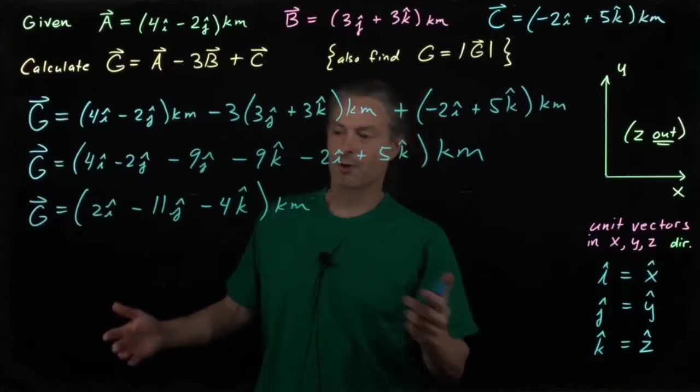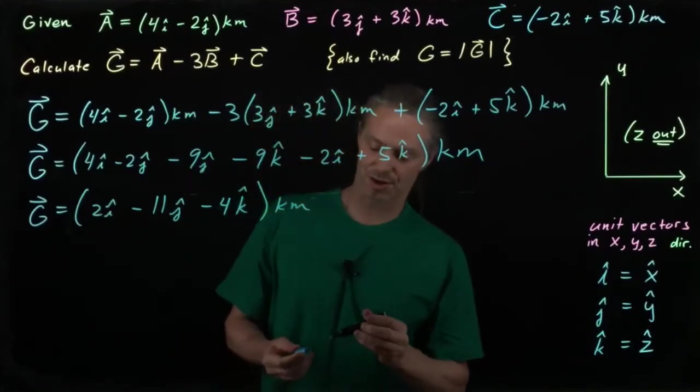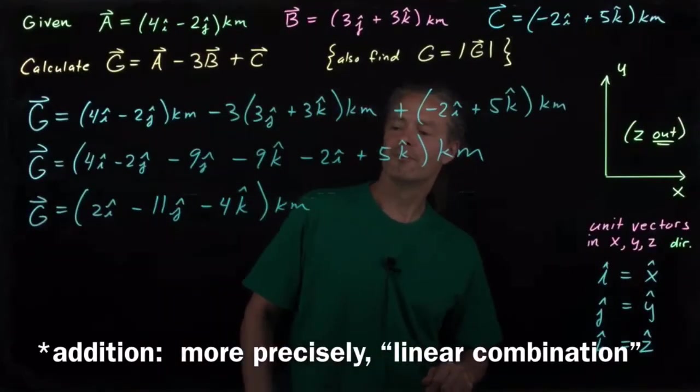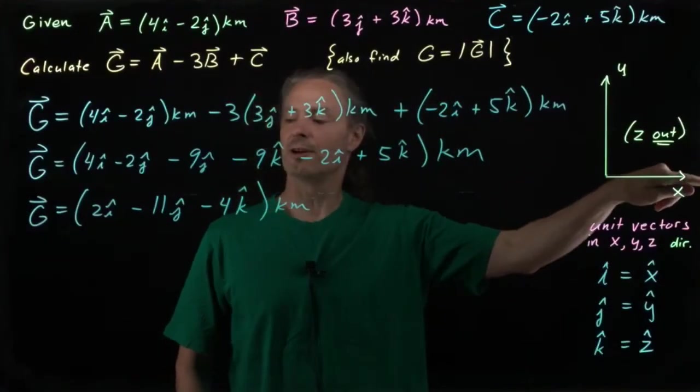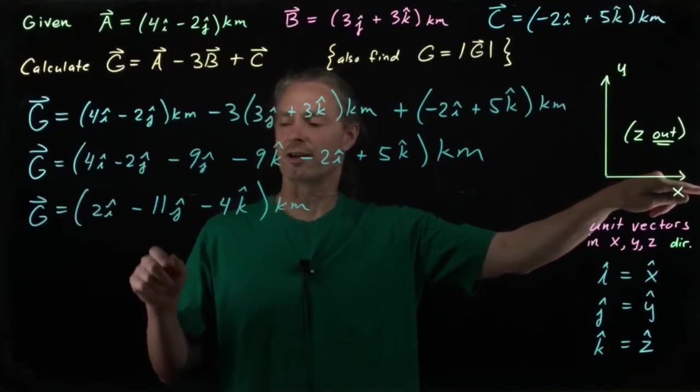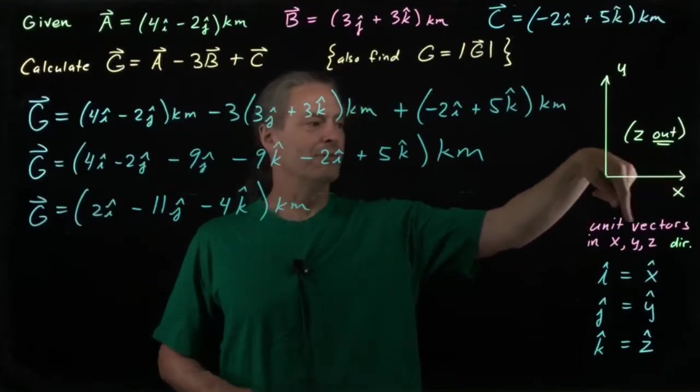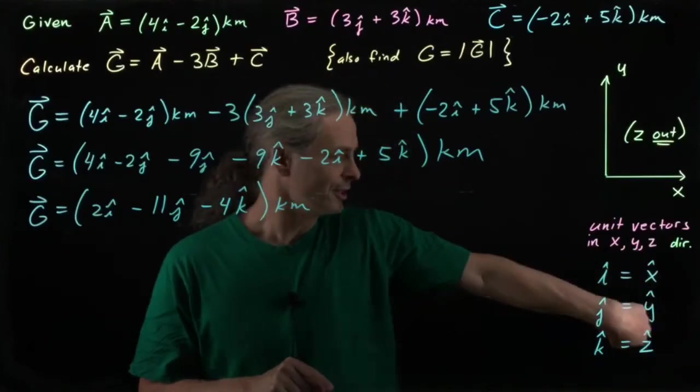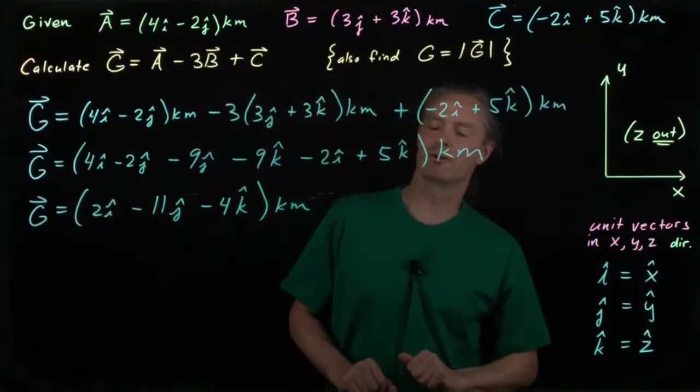All right, so that's the vector. This is our g-vector. We've done it. We've done this addition. What is g-vector? Well, it's 2 kilometers in the positive x direction, and 11 kilometers in the negative y direction, and then 4 kilometers in the negative z direction. That's what this vector represents.